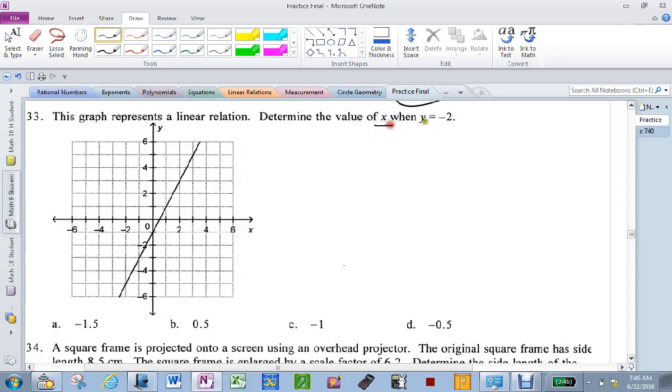Determine x when y is negative 2. So I go to negative 2 and I find my x right there. It's a half. Negative 1.